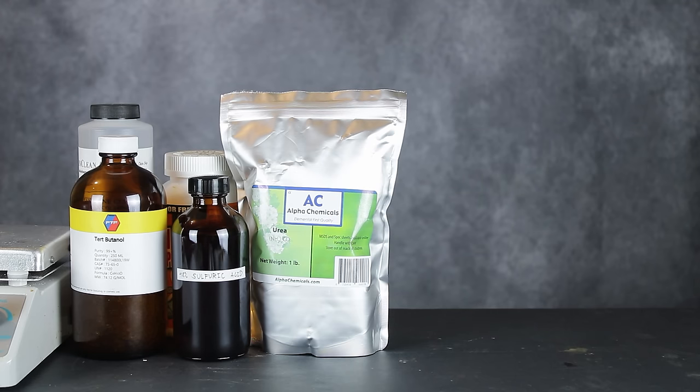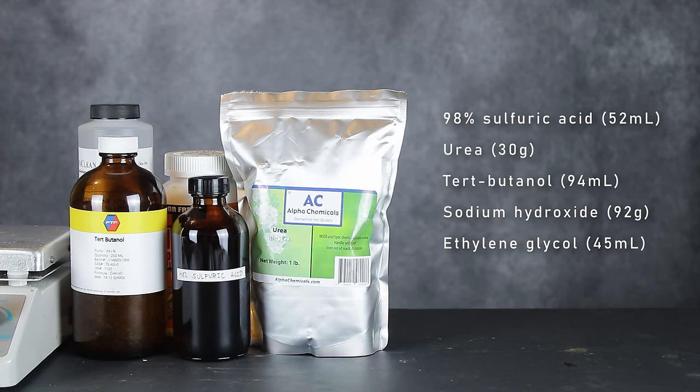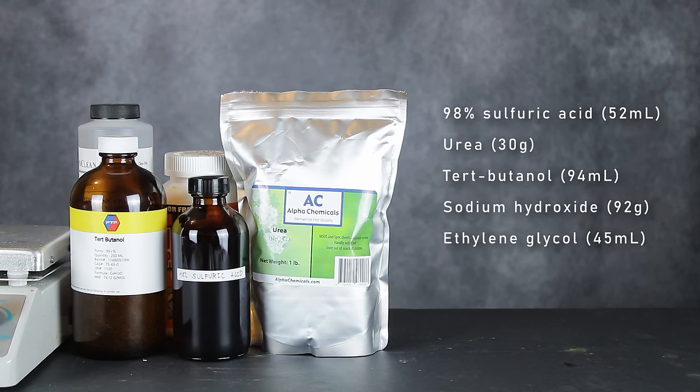To make tert-butylamine, the following reagents are necessary: 98% sulfuric acid, urea, tert-butyl alcohol, sodium hydroxide, and ethylene glycol. Almost all of these can be bought on Amazon, but I had to concentrate the sulfuric acid myself by boiling drain opener.